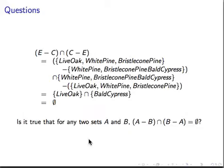First, notice that if we take the set of evergreens and subtract out the conifers, we get the set containing just live oak. If we subtract the evergreens out of the set of conifers, we get the set containing just bald cypress. Those two sets are disjoint. Now, that was a specific case. Is it true in general that for sets A and B,